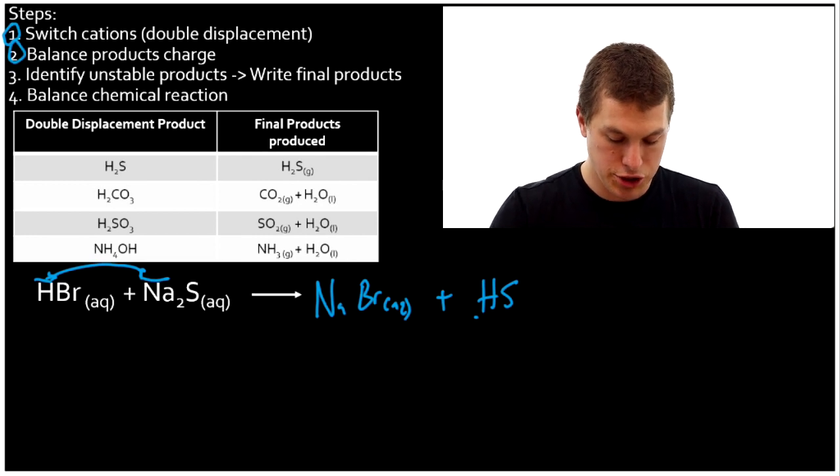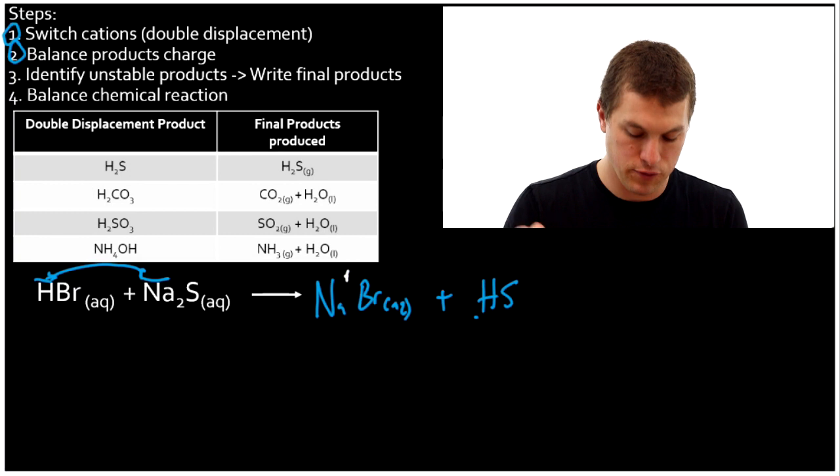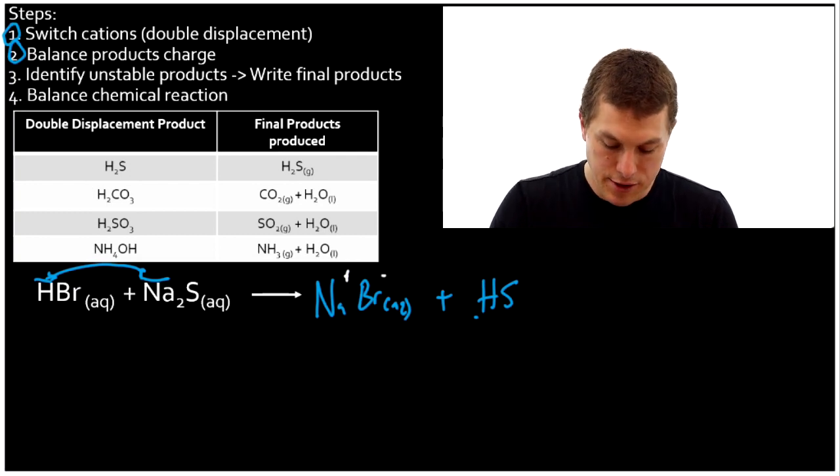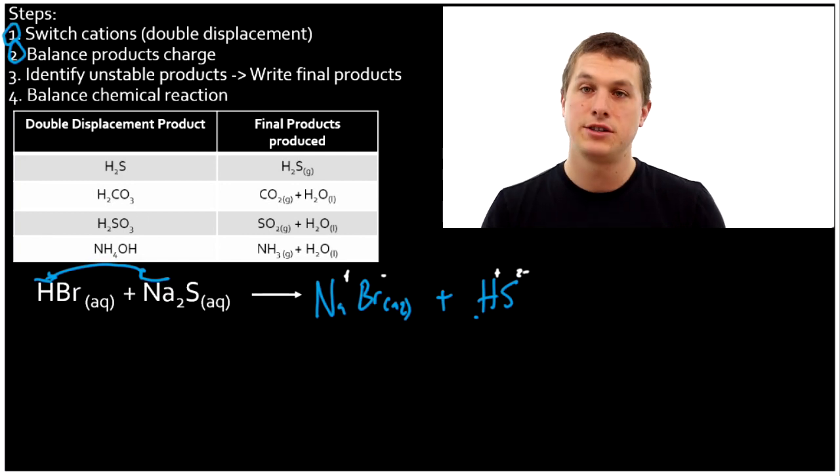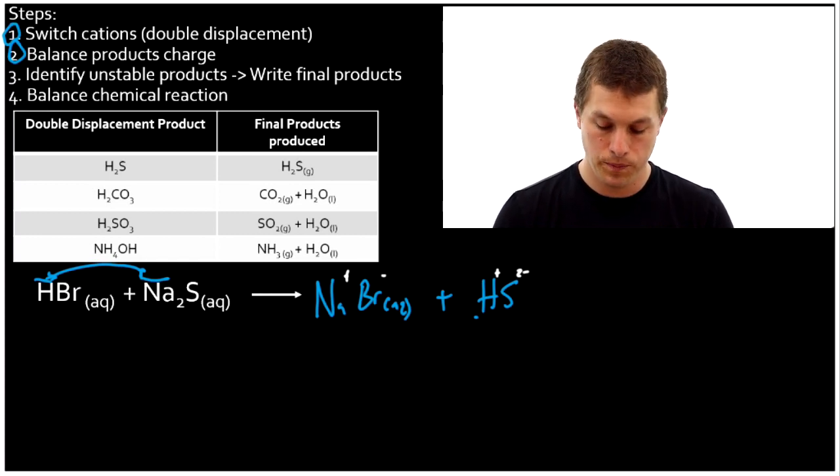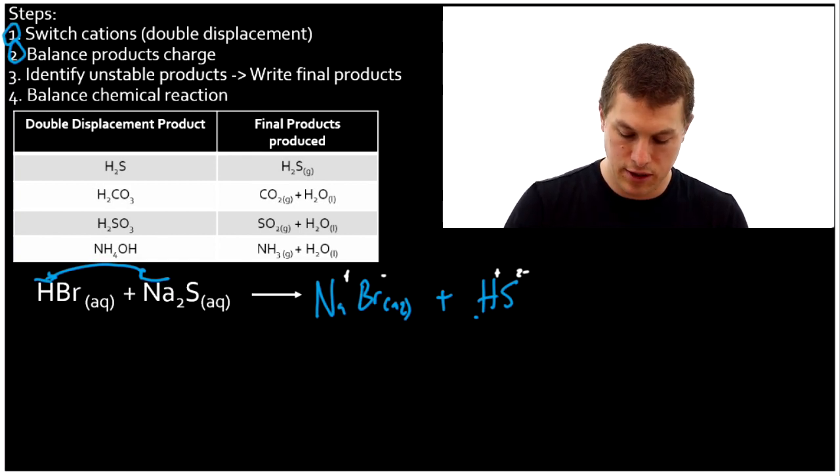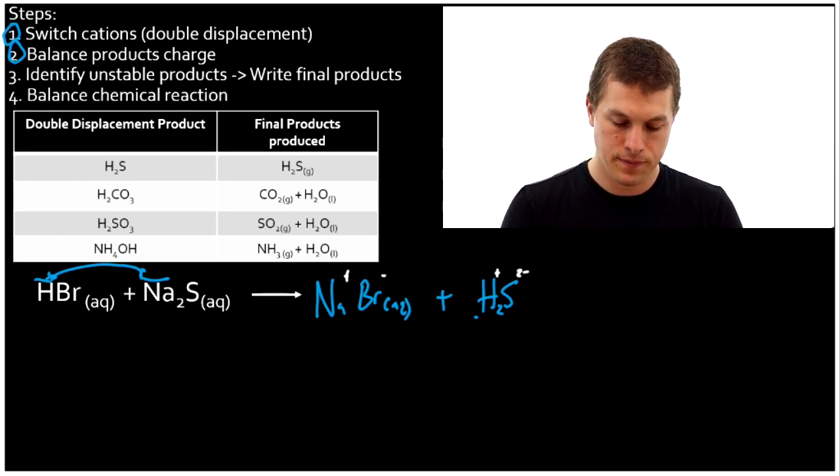Step two, balance the charge. So sodium is plus one. Bromine's minus one. Those are balanced. Hydrogen's plus one, and sulfur is minus two. If you're not sure where I'm getting these charges from, check out my video predicting the charges from the periodic table. And that'll show you how I know what these charges are. I'll link to that below. So H2S isn't balanced. It's plus one and two minus. So we gotta cross over to balance those. It'll give us two hydrogens. H2S.